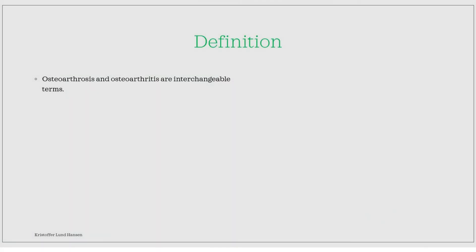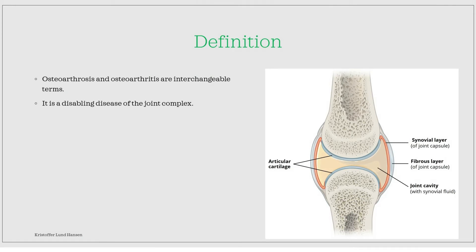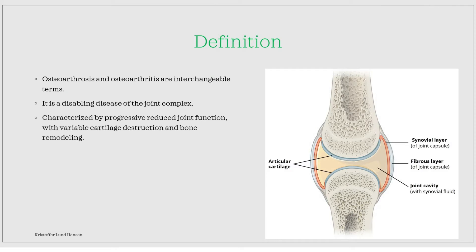Osteoarthrosis and osteoarthritis are terms that tend to be used interchangeably — which term is used depends on who you ask. It is a disabling joint disease characterized by non-inflammatory degeneration of the joint complex, which consists of the articular cartilage, the subchondral bone and the synovium. There is a progressive destruction of the joint, causing progressive reduction in function and a variable amount of cartilage destruction and bone remodeling.